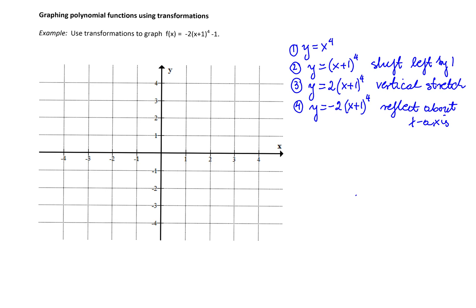And finally, we have to subtract 1 to obtain the formula for the function. We have to subtract 1 from the previous one and that means we need to shift the graph down by 1.